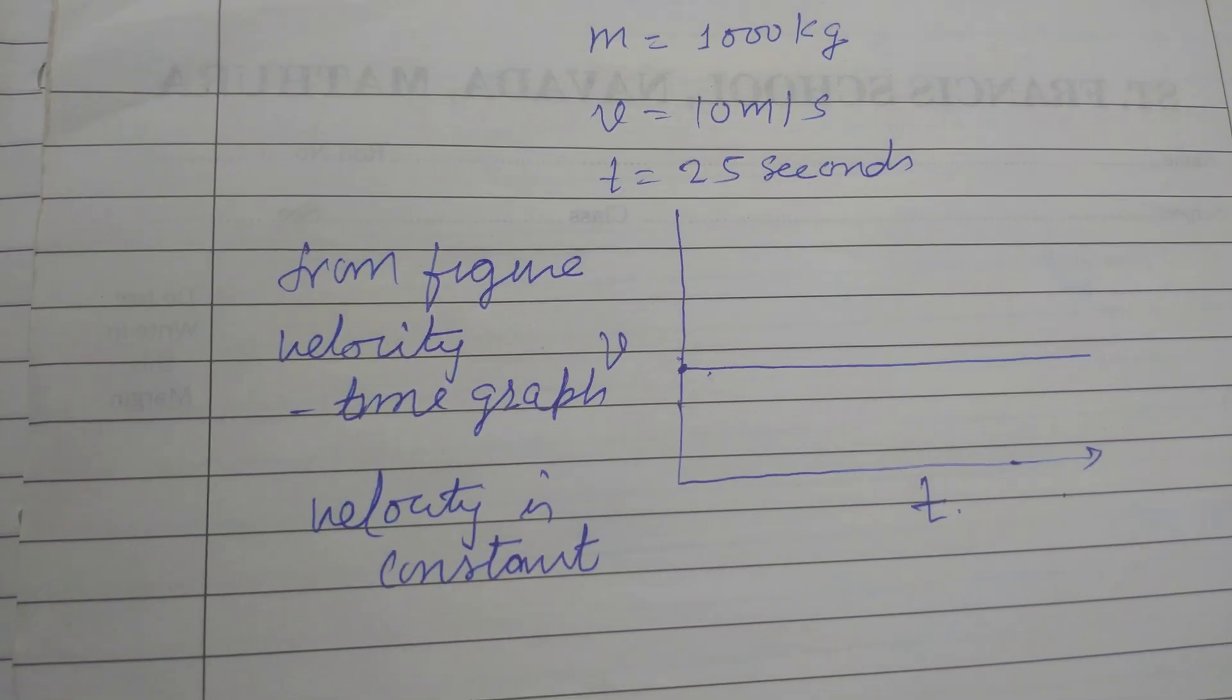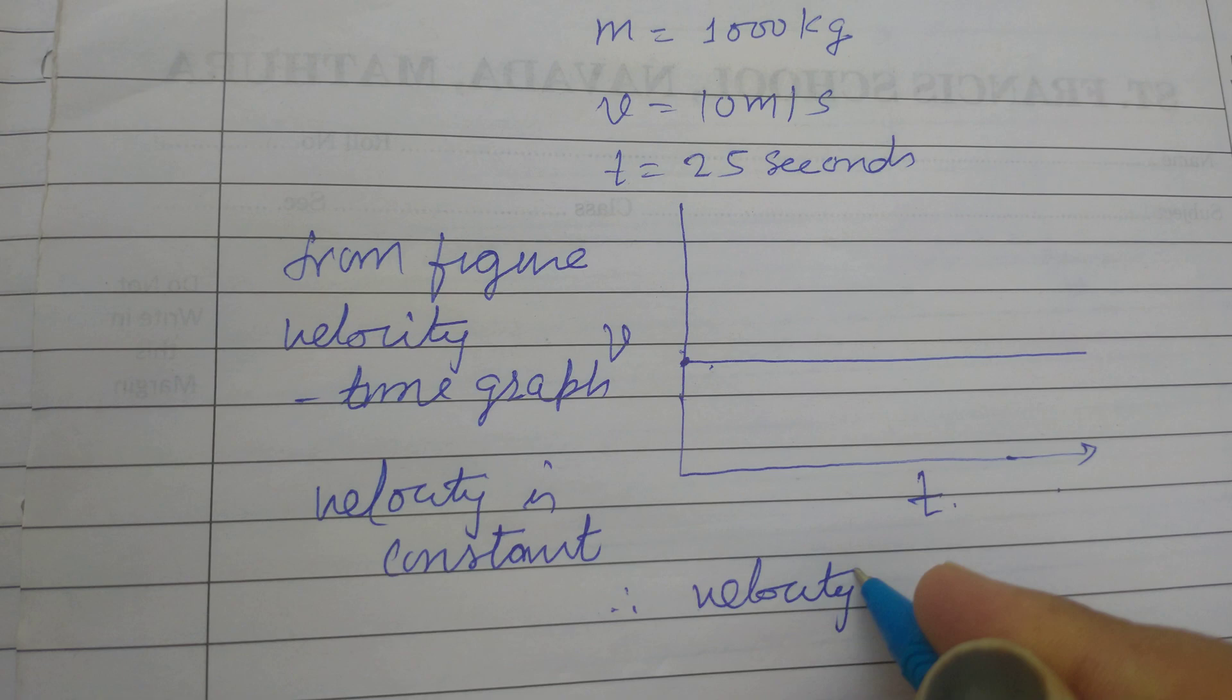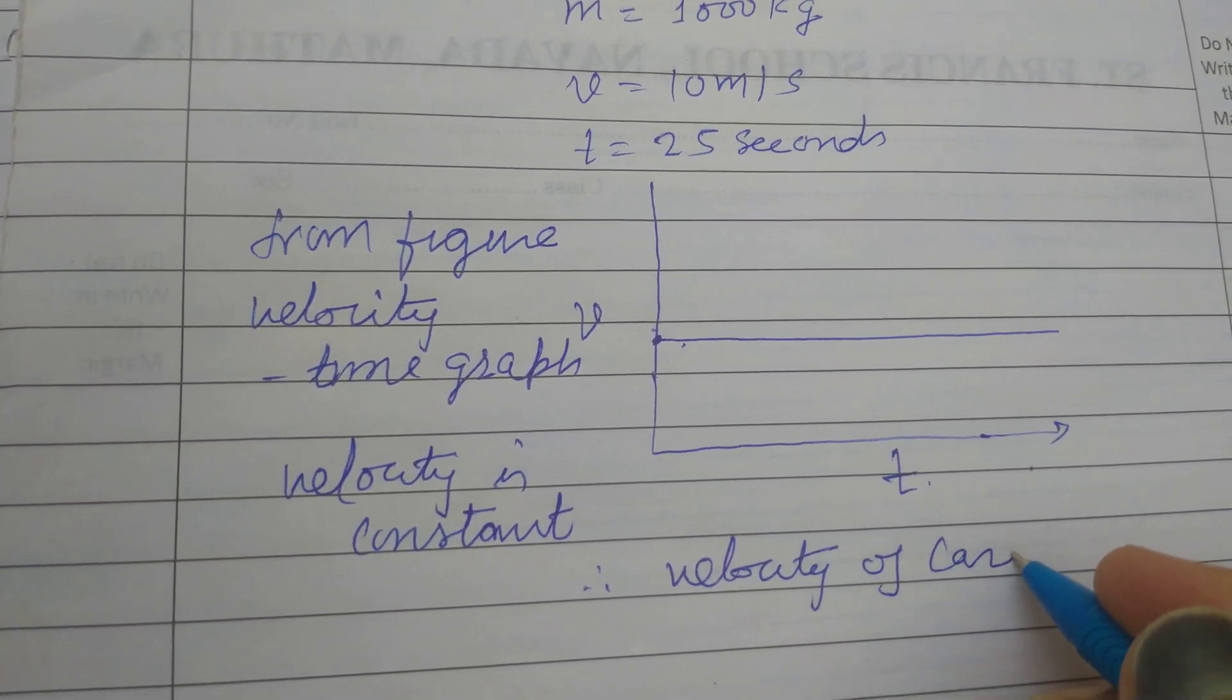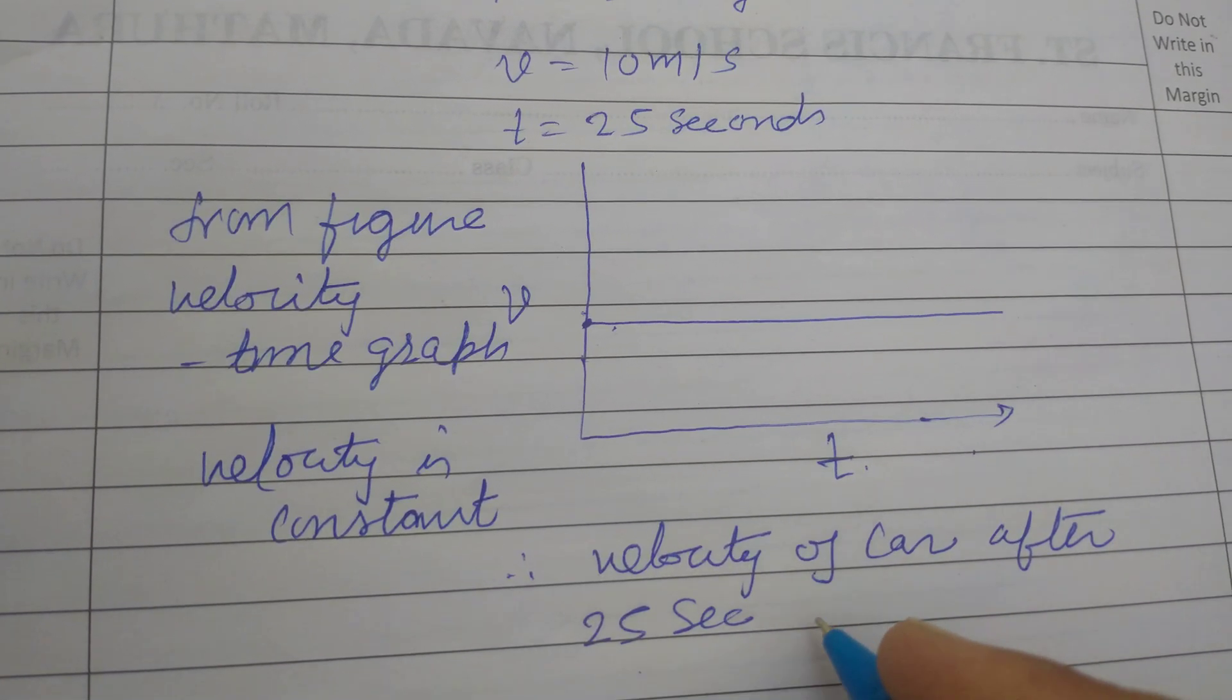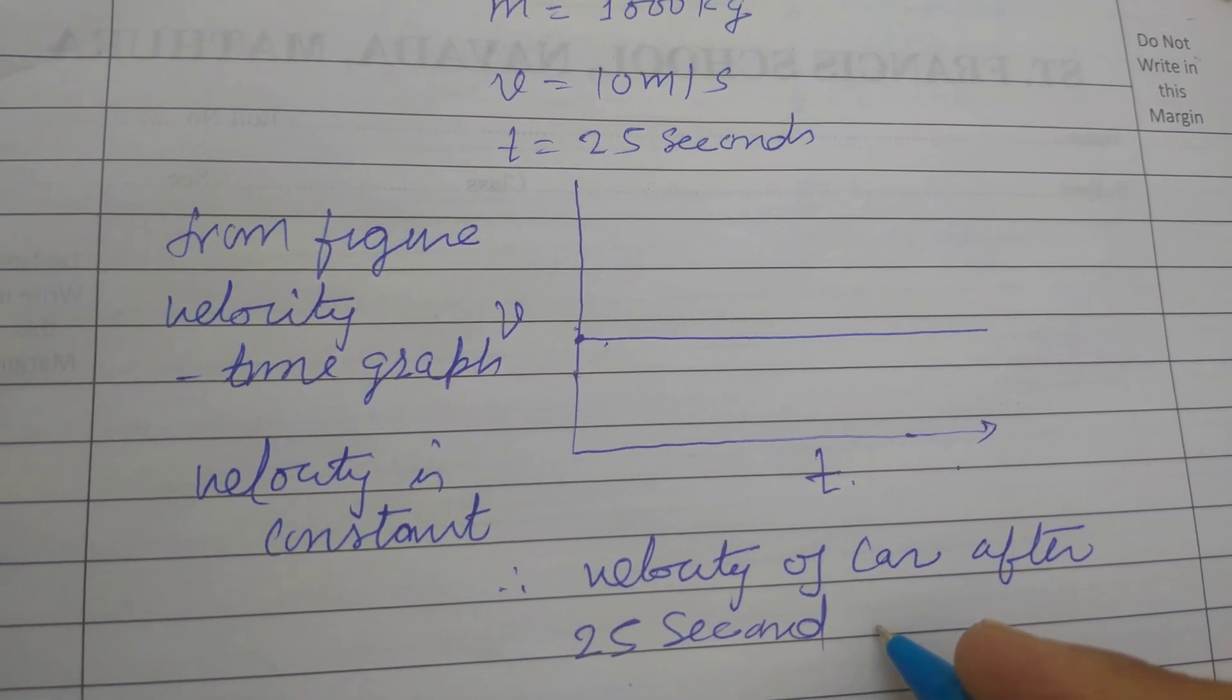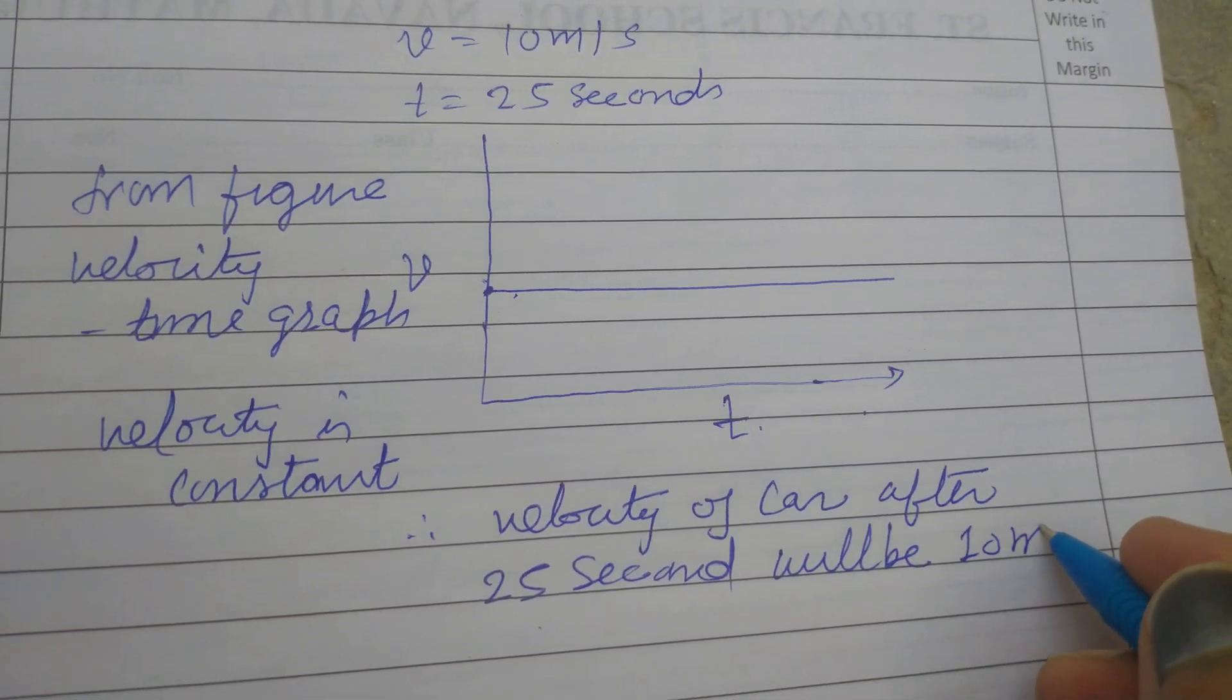So velocity, therefore, velocity of car after 25 seconds will be 10 meter per second.